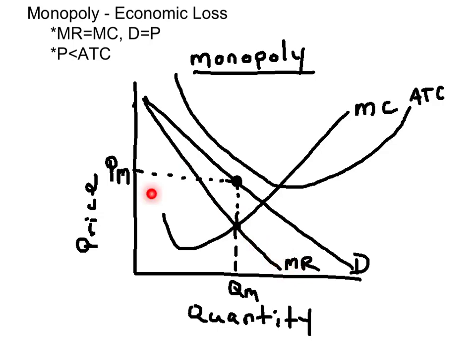Your marginal cost curve is like a check mark — label it MC. Your average total cost is going to be above your demand curve, but make sure the minimum ATC hits the marginal cost curve before coming up to complete its U shape.